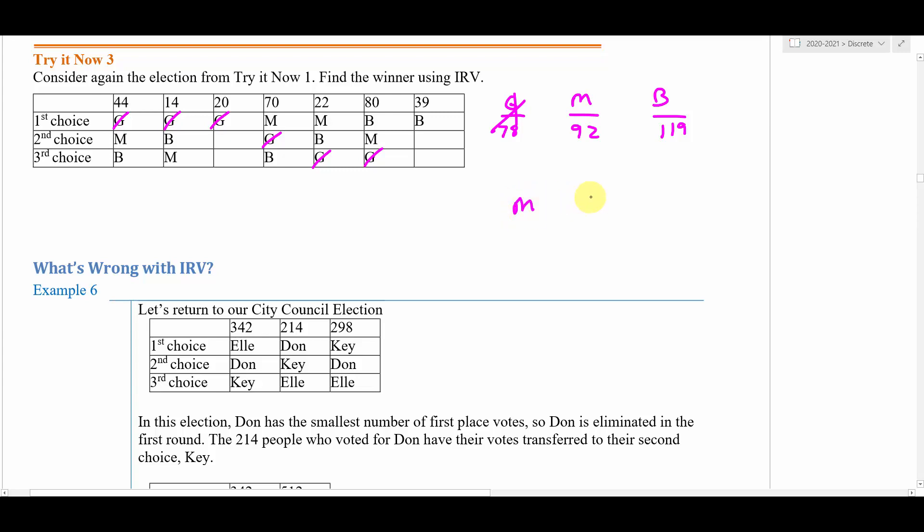We're going to go through, so if G is eliminated, in the second round we're only going to have M and B. I go through each of the columns here. M is going to get these 44, they lose here, no votes here because M or B does not appear, so these 20 votes won't even get counted in the second round. But M wins these two columns for sure because they were already at the top. So we got the 44, the 70, and the 22, and when we add those up we'll get 136 first place votes for M.